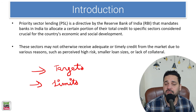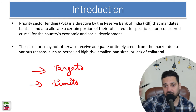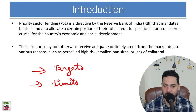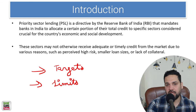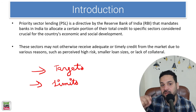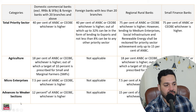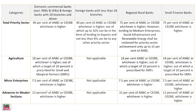RBI set targets for those specific sectors, and that's what we are going to understand in this whole session: what are the targets for various sectors, how to identify whether loans are priority sector loans or not, and the various amendments and updates. All updates are consolidated here. You can also read on RBI's official website — I'll give the link in the description. Let's start with the limits. This particular table is very important.